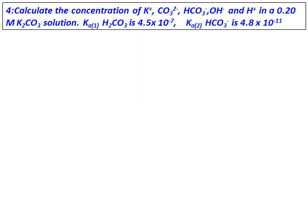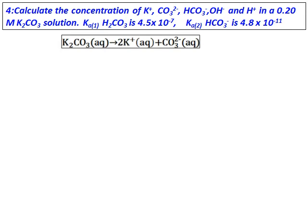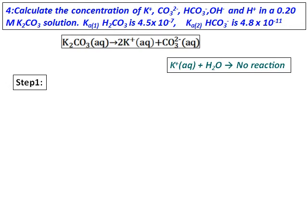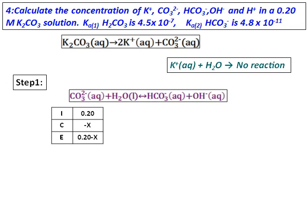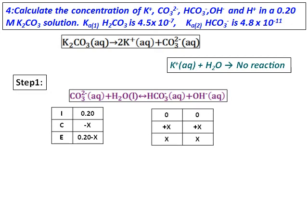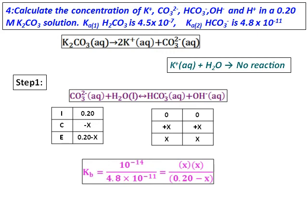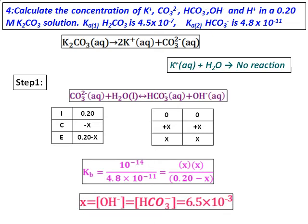Calculate the concentration of potassium ions, carbonate, bicarbonate, OH⁻, and H⁺ in a 0.20 molar potassium carbonate solution. Both ionizations of H₂CO₃ are given. Potassium carbonate in water gives potassium ions and carbonate ions; potassium ions do not react with water. When carbonate ions react with water, they accept a proton to form bicarbonate and release hydroxide ions. We set up an ICE table, convert Ka to Kb, and solve for X — the concentration of both OH⁻ and HCO₃⁻.